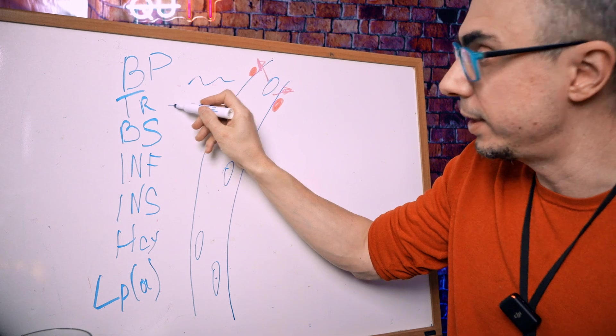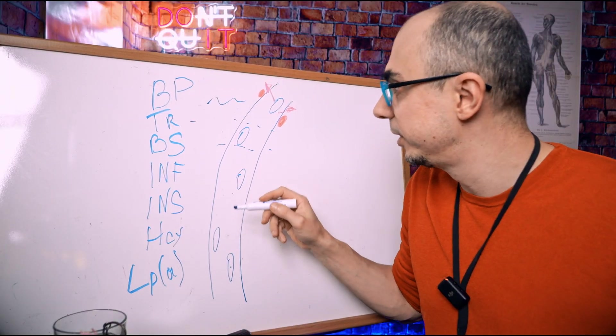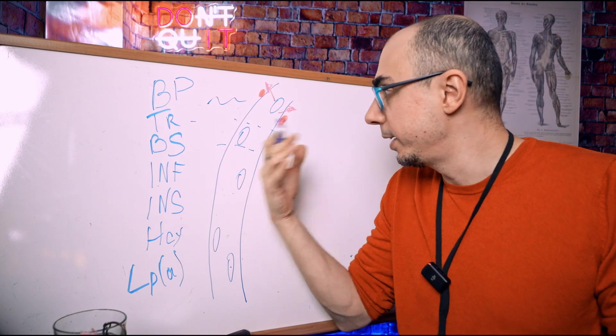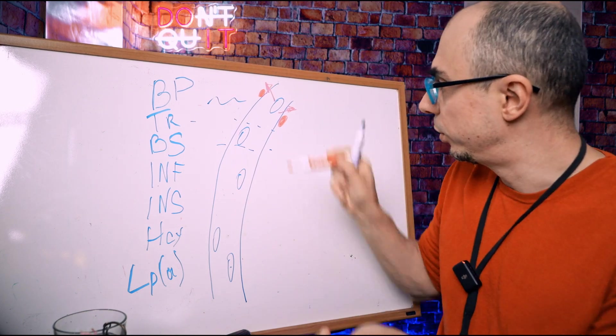You have triglycerides, which are like pedestrians trying to run across the road. You have blood sugar, which is like running on studded tires. Not so good for the road.